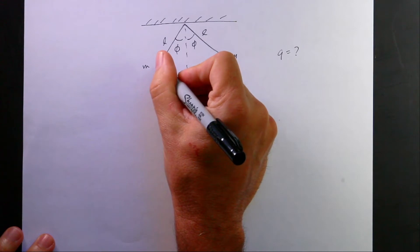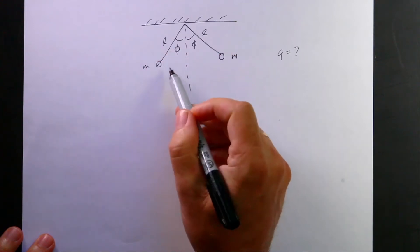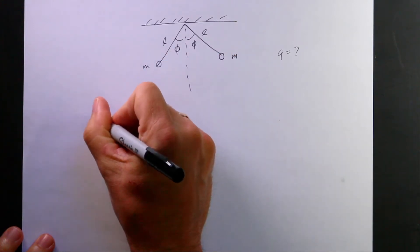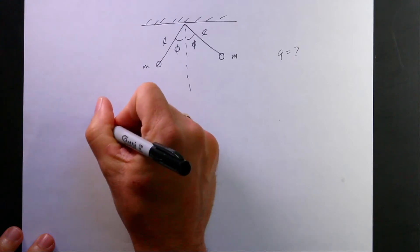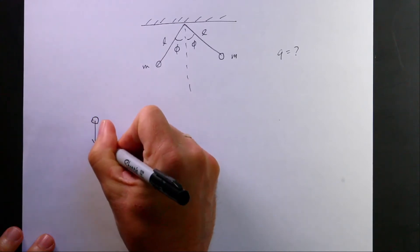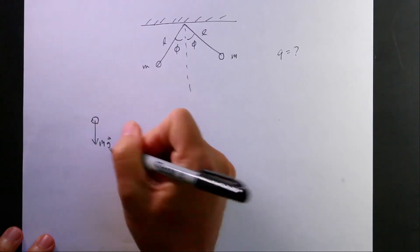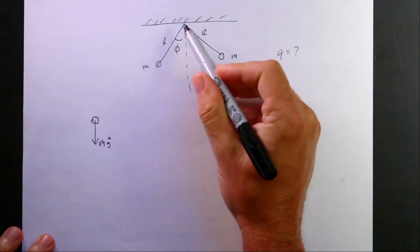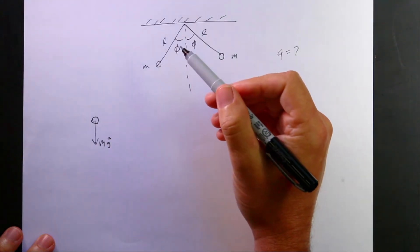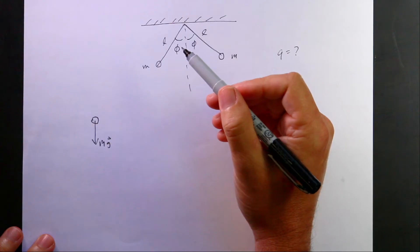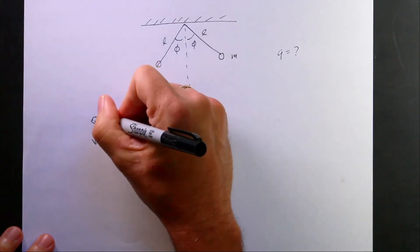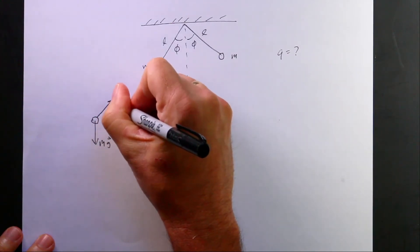So let me draw the force diagram for this mass right here. So here I have that mass. There's the downward gravitational force, mg. Then there is the tension in the strings. So strings are special in that they can only pull in the direction of the string. So that means that the tension is going to be this way. I'll call it T.